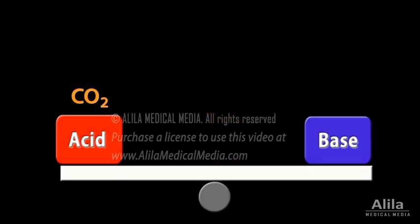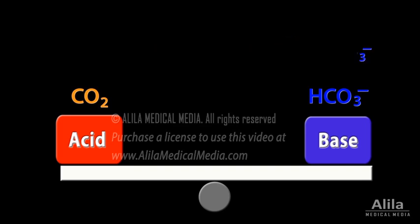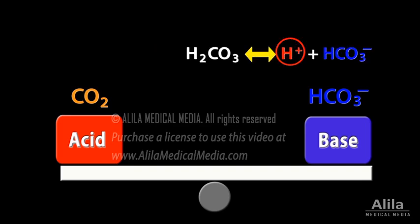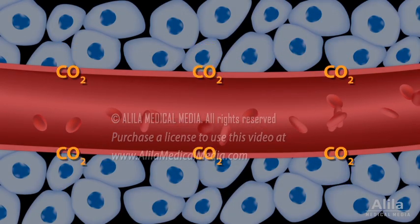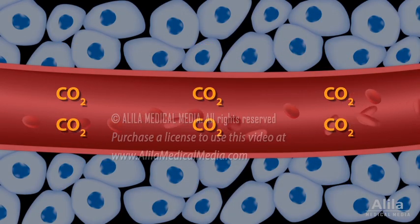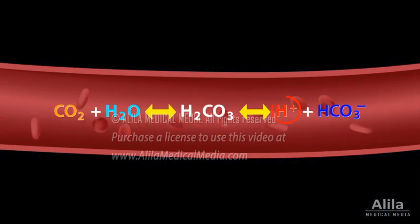The major players are carbon dioxide and bicarbonate. Carbon dioxide acts as an acid as it combines with water to make carbonic acid, releasing hydrogen ions, while bicarbonate binds to and neutralizes hydrogen ions, acting as a base. Normal cellular metabolism constantly produces and excretes carbon dioxide into the blood, therefore constantly making the blood more acidic.